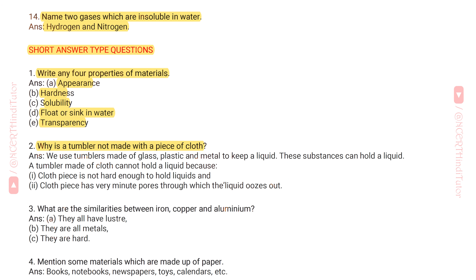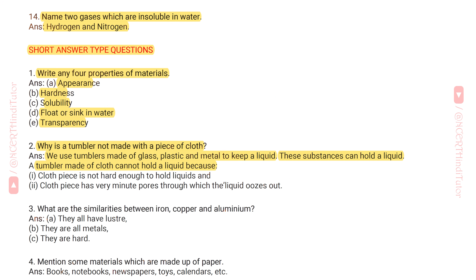Answer: We use tumblers made of glass, plastic, and metal to keep a liquid because these substances can hold a liquid. A tumbler made of cloth cannot hold a liquid because, first, the cloth piece is not hard enough to hold liquids, and second, the cloth piece has very minute pores through which the liquid oozes out.